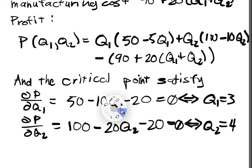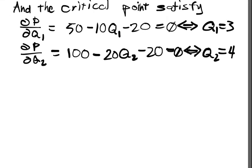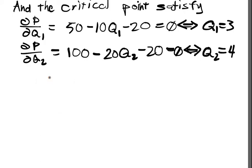So we have the critical points, and we want to know, well is that a global maximum or global minimum? So now we check the second order conditions.